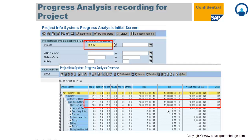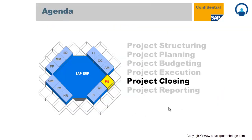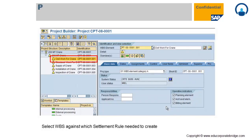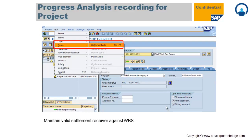Finally, project closing is done in two ways: financial closing and technical closing. Financial closing refers to settlement of the project, and technical closing refers to status-based closure. You select the appropriate WBS element, first maintain the settlement rule, and then proceed with the closing process.